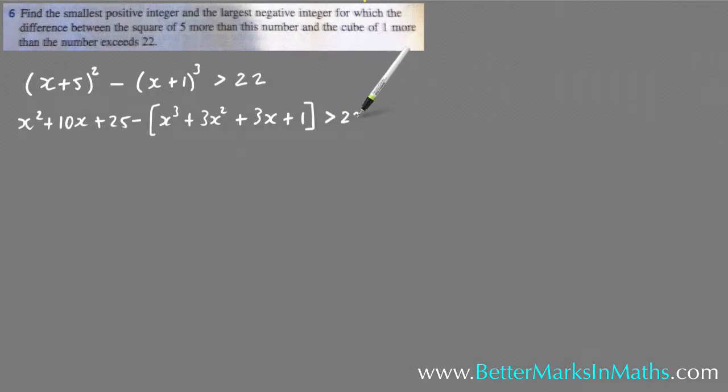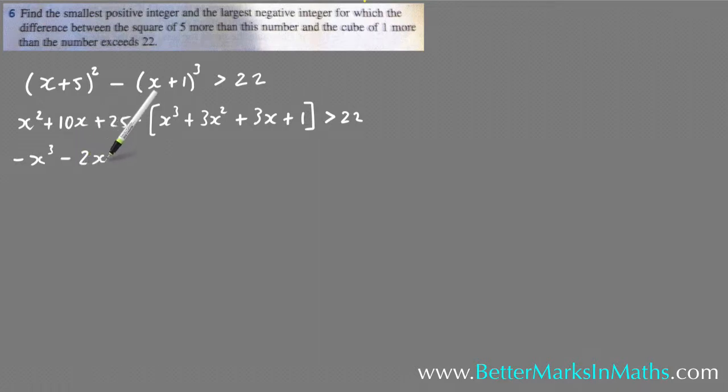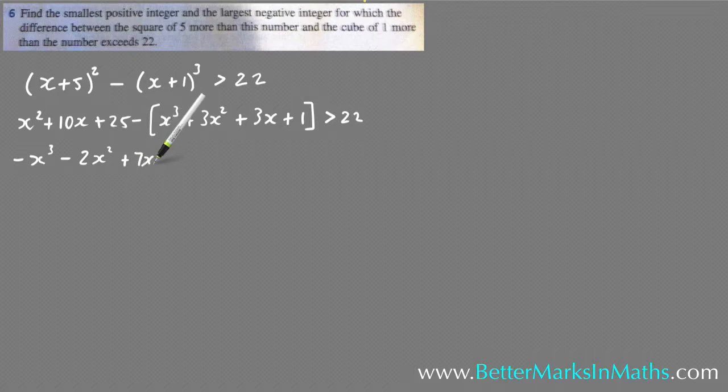From there expand all this out. Expanding gives x² + 10x + 25, minus (x³ + 3x² + 3x + 1), and that's all more than 22. Combining like terms: minus x³, then x² minus 3x² is minus 2x², then 10x minus 3x is plus 7x, and 25 minus 1 equals positive 24.